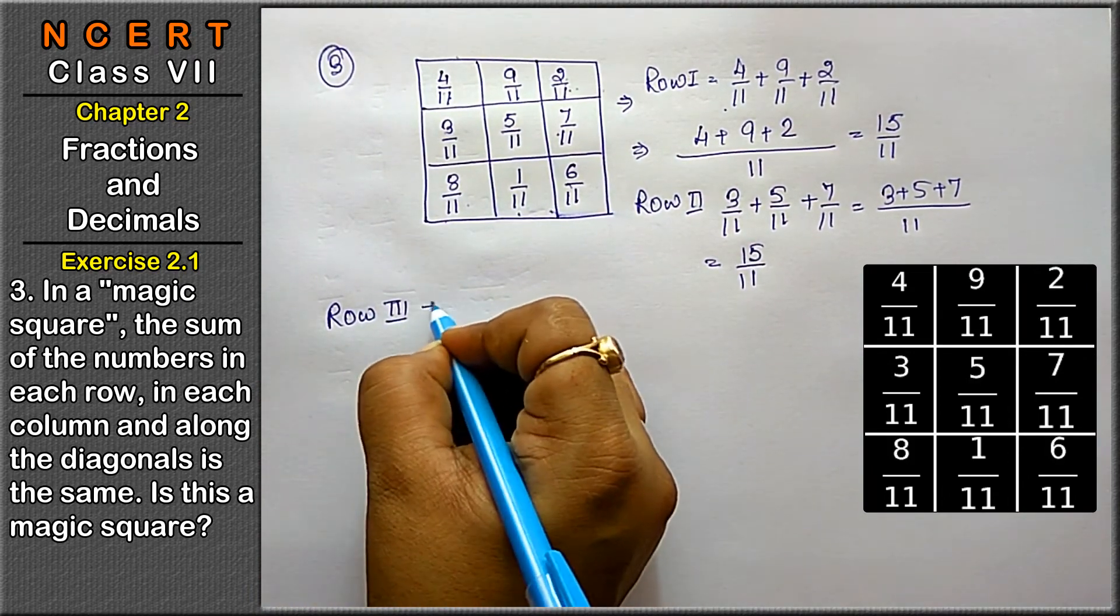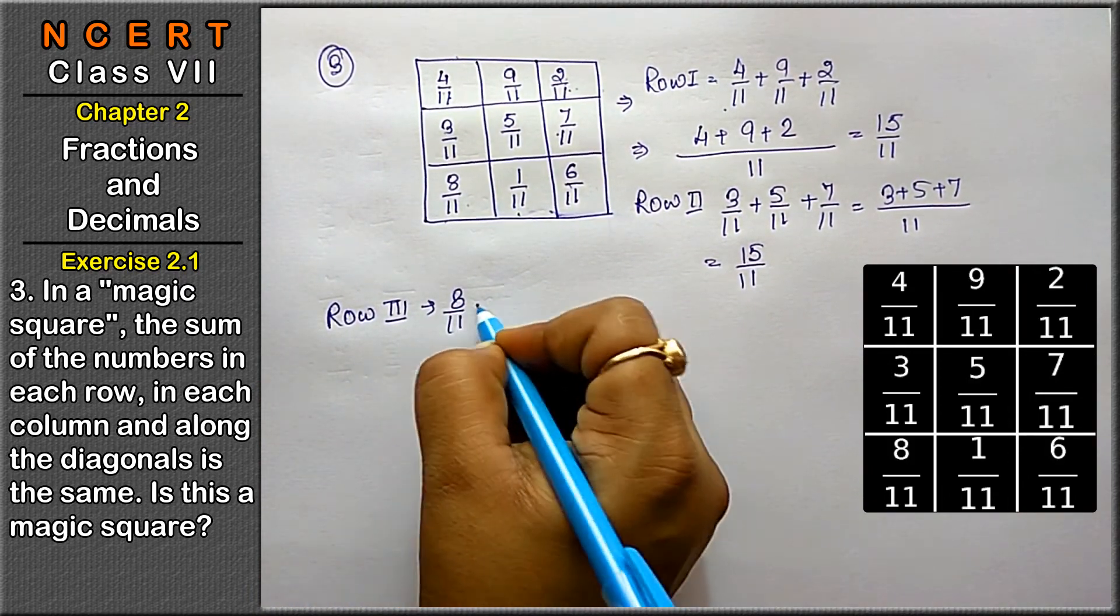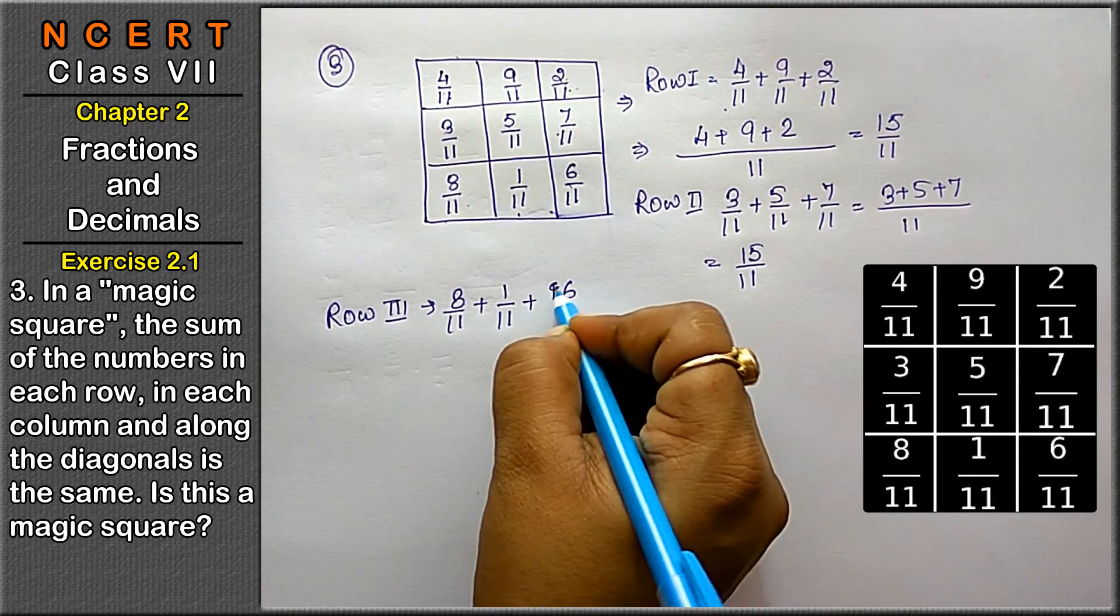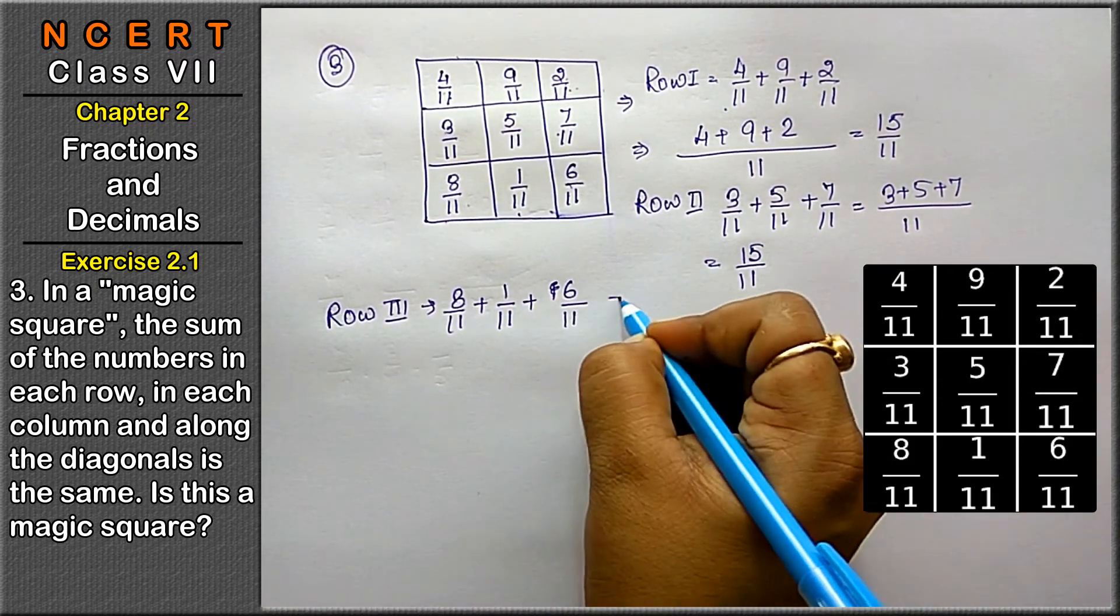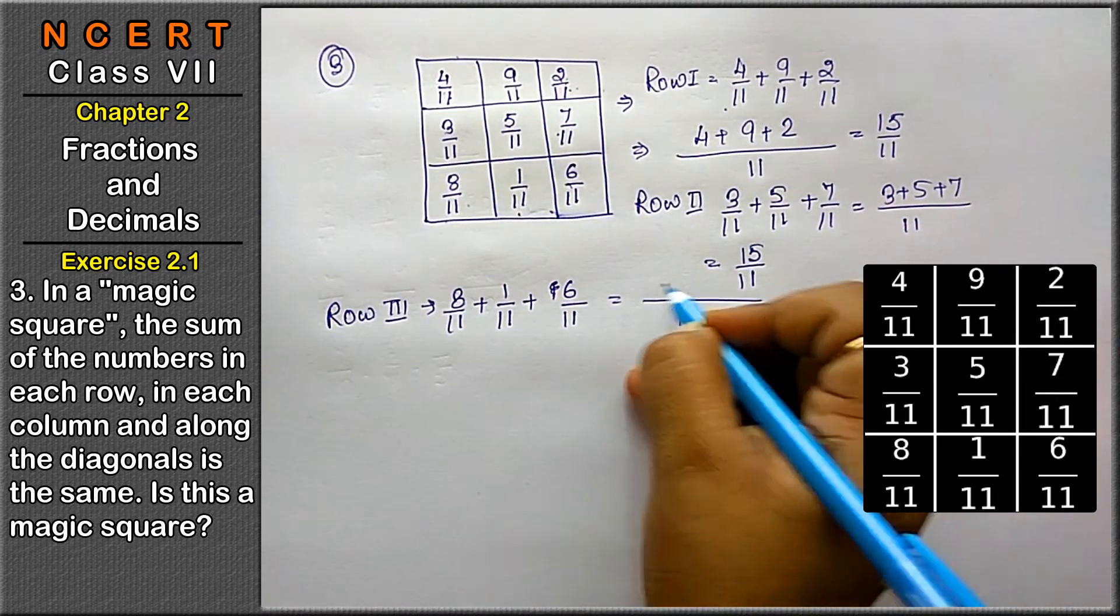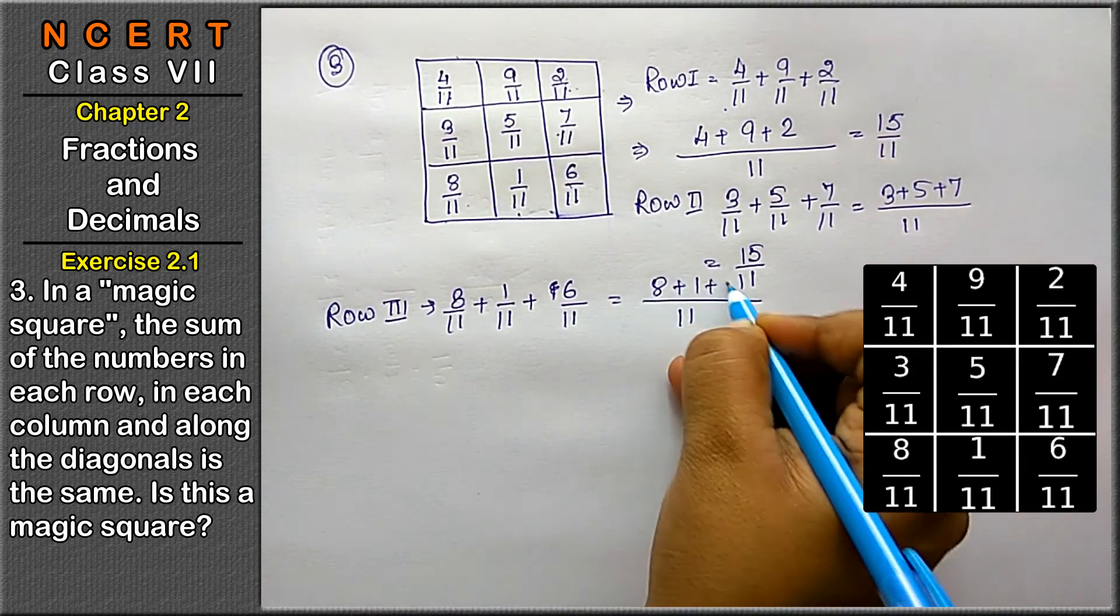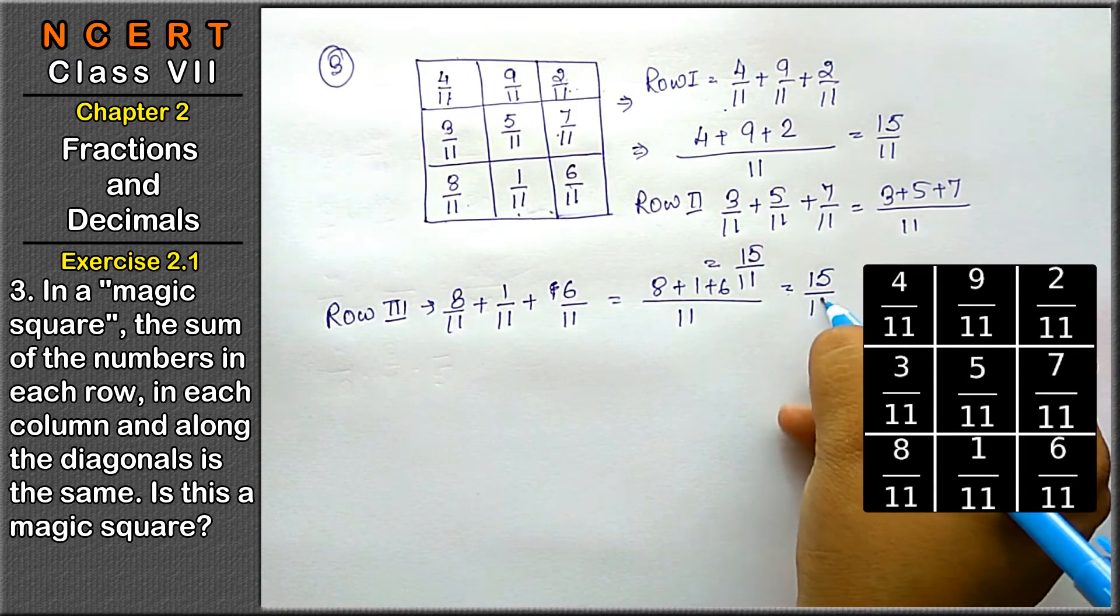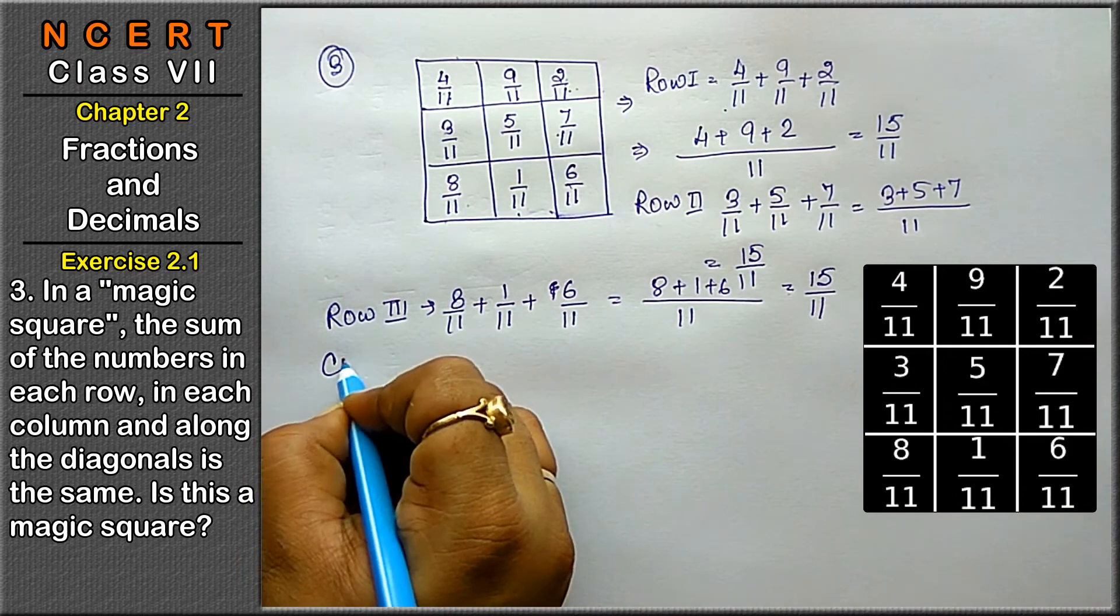Row third is 8 upon 11 plus 1 upon 11 plus 6 upon 11. 11 is the LCM. 8 plus 1 plus 6, that is 9 plus 6 is 15 upon 11 is the answer. Let's see the column.